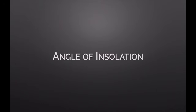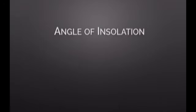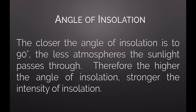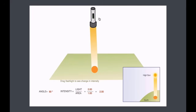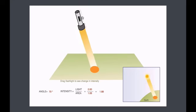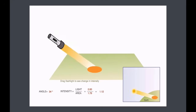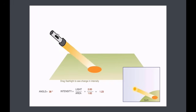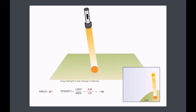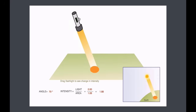The next factor is the angle of insolation — this connects back to our discussion of seasons. The closer the angle of insolation is to 90 degrees, the less atmosphere the sunlight passes through, and therefore the higher the intensity. The easiest way to describe it is with a flashlight: the more focused the light, the more intense; the more spread out, the less intense. When the sun is at a high angle like 90 degrees, intensity is high; at a lower angle like 30-something degrees, intensity is much less.